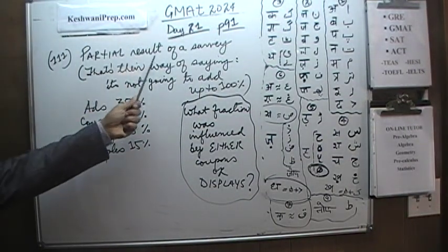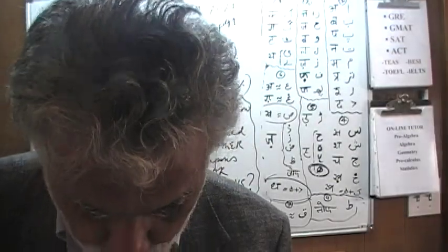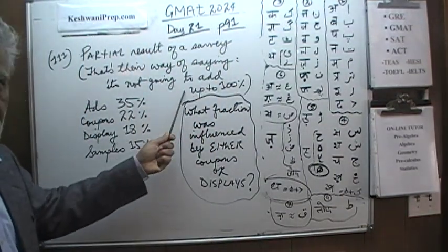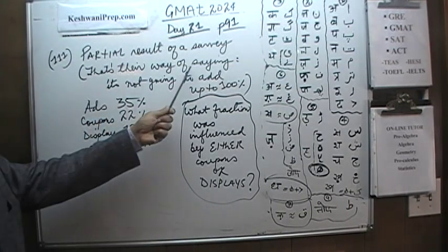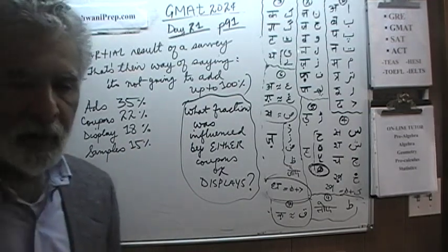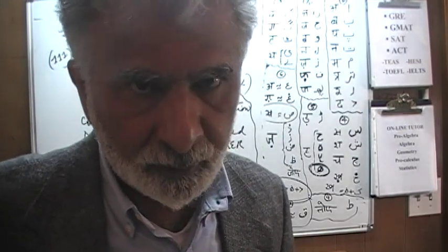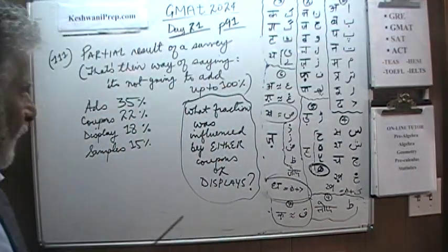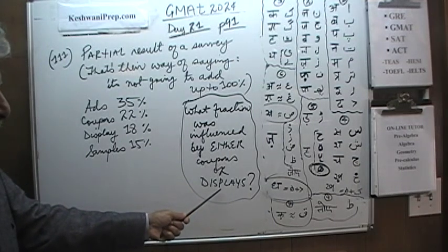It says that we are given a partial result of a survey. The table shows partial result of a survey. Now this part that you see there, this is not something that appears in the book. This is something I am telling you. There is their way of saying that it is not going to add up to 100%. No need to freak out. No need to be alarmed. We know it is a partial result. The question is, based on these partial results that we have from the survey, here is the question.